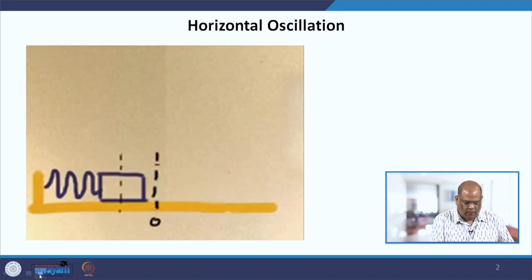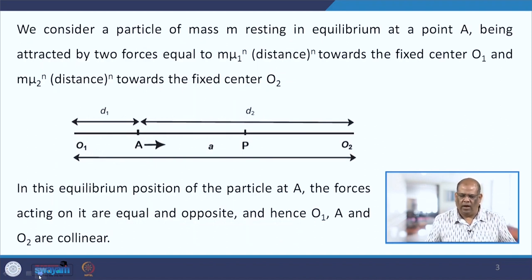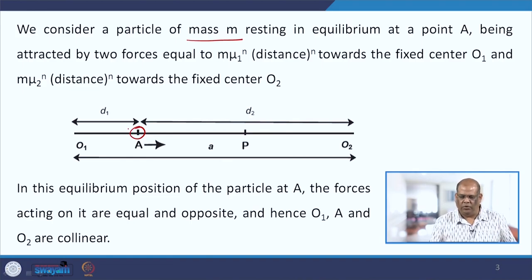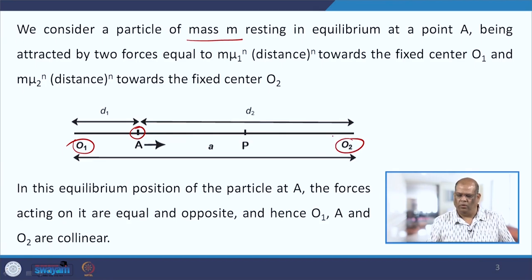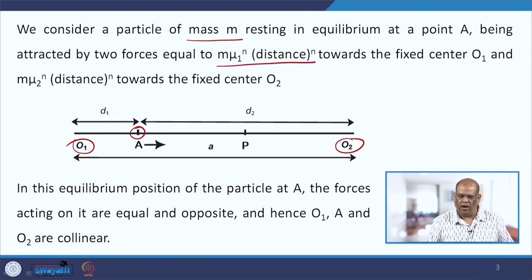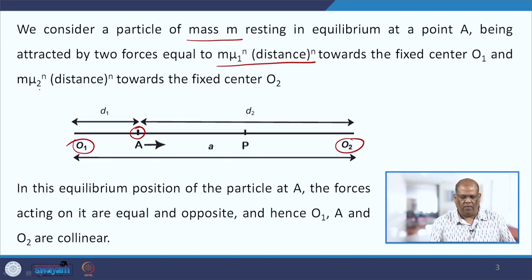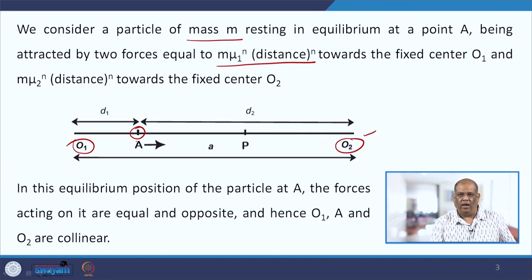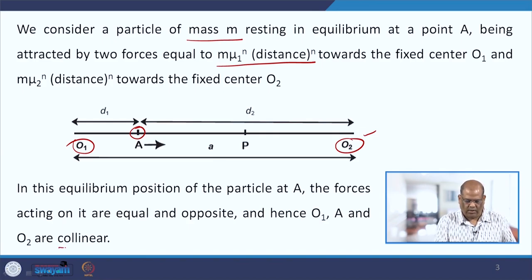To model this kind of phenomenon, we say that a particle of mass M rests at a point A. There are two forces acting on it: one with origin O1 and another with origin O2. The law of force is m·μ₁ⁿ multiplied by distance to the power n towards O1, and m·μ₂ⁿ multiplied by distance to the power n towards the fixed centre O2. At point A, both forces are acting and the particle is in equilibrium, so the forces are equal and opposite. O1, A, and O2 are in a straight line and hence are called collinear.